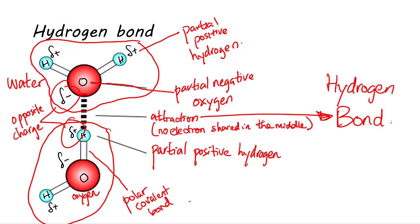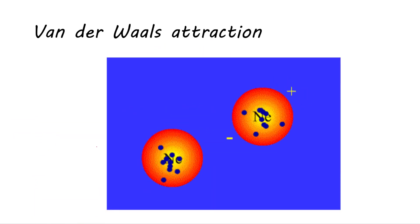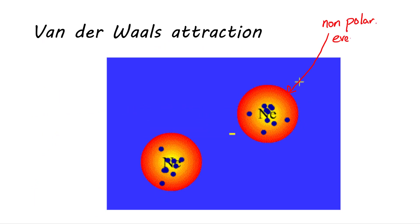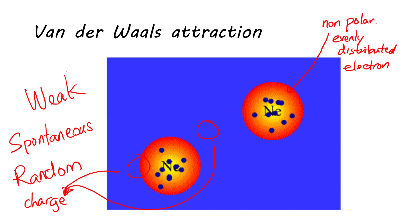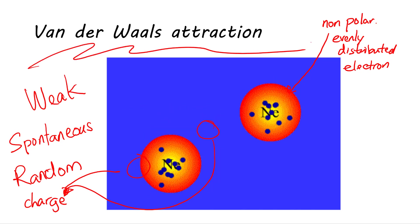What if the molecules are not polar? Attraction can still form. This is because electrons are not always evenly distributed in the molecule, and will move randomly by chance. This will lead to random and spontaneous positive and negative charge of the molecule. These charges enable the atoms and molecules to attract weakly to one another. And we call this weak interaction Van der Waals interaction.